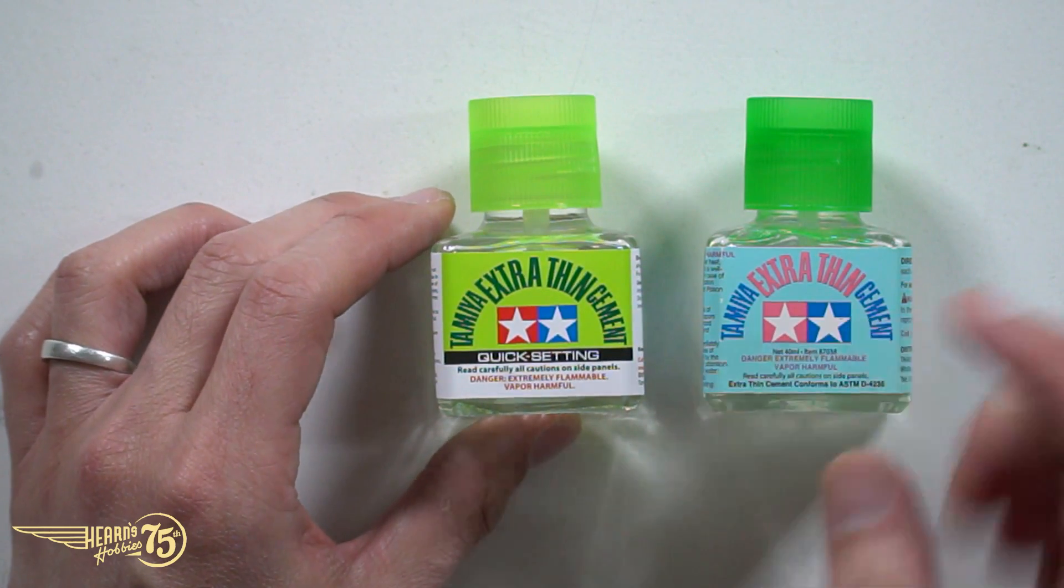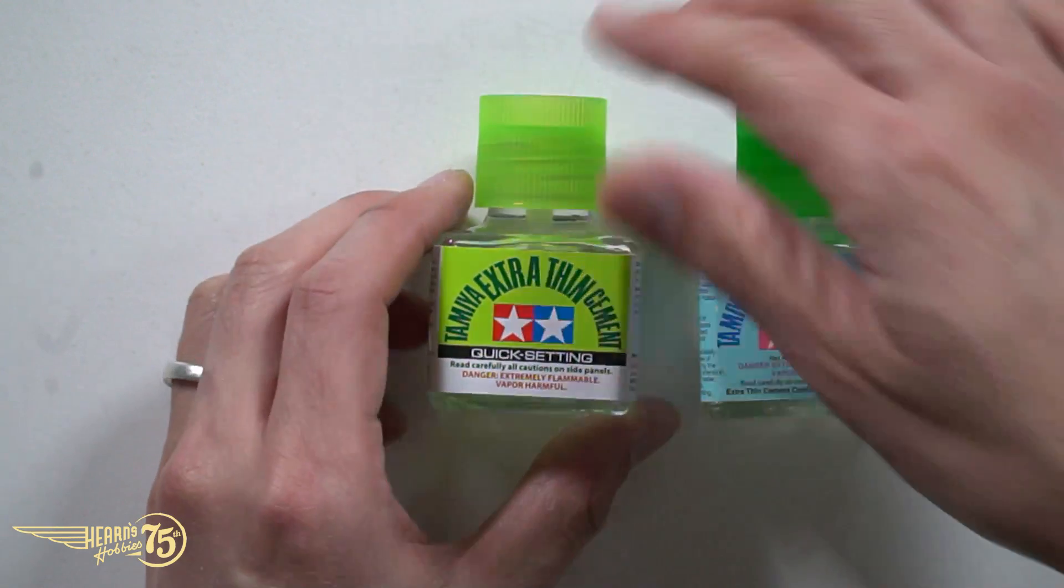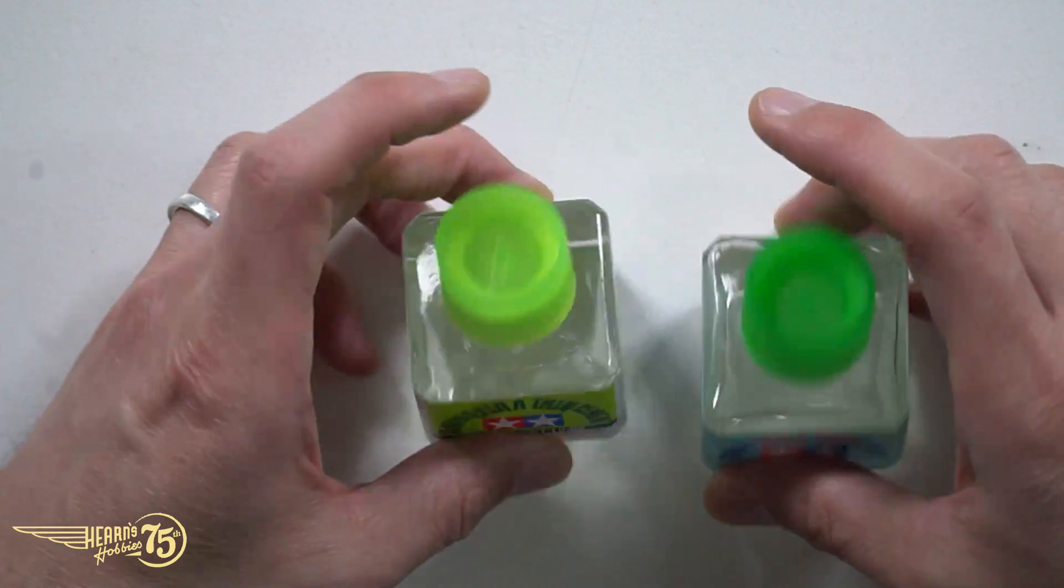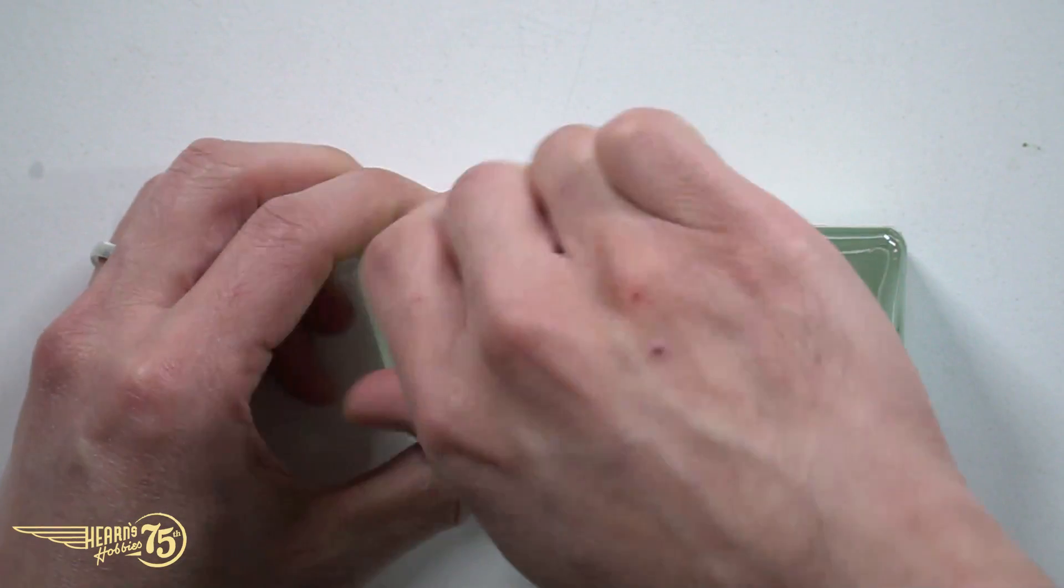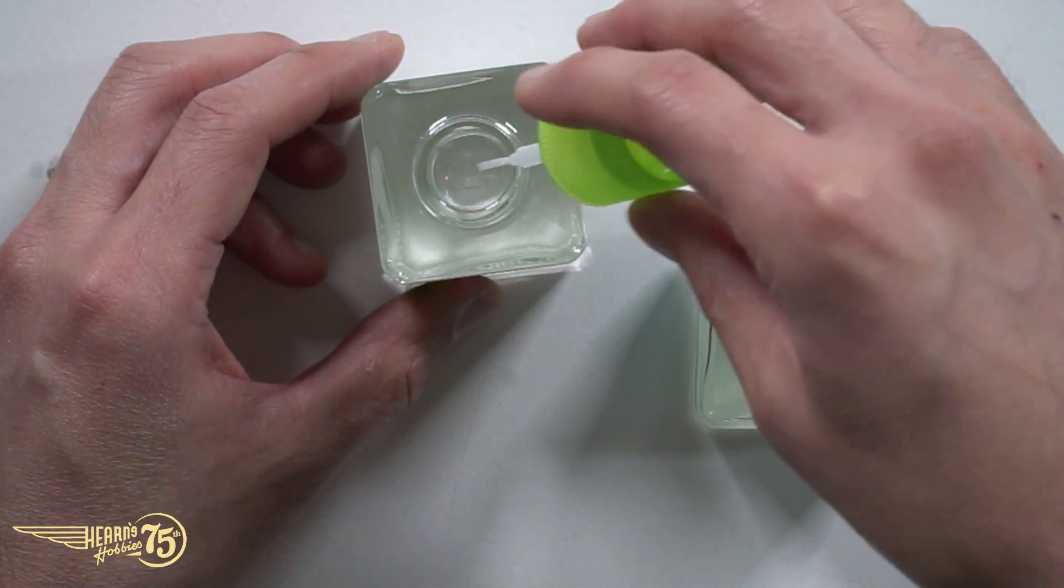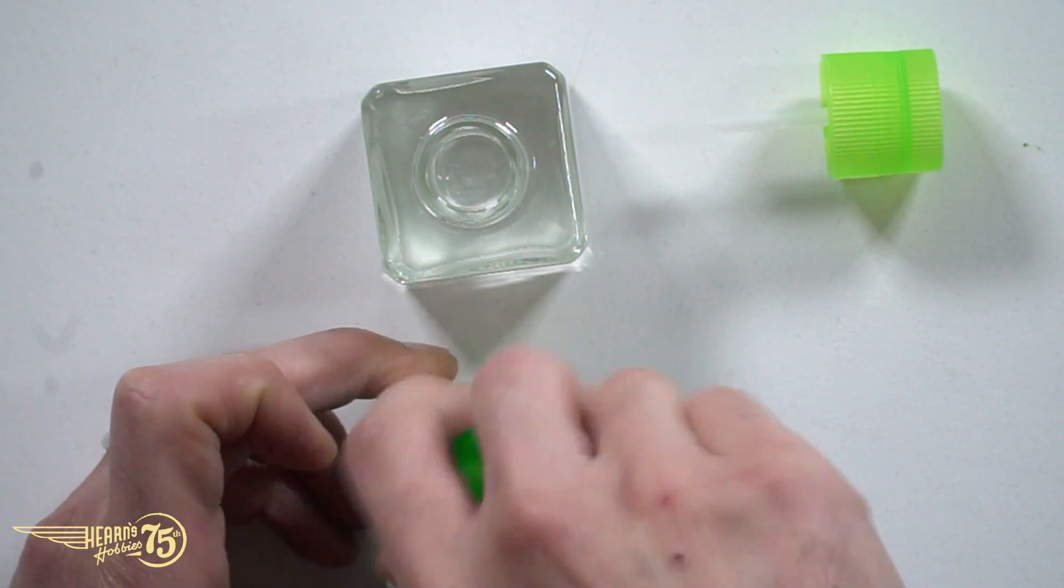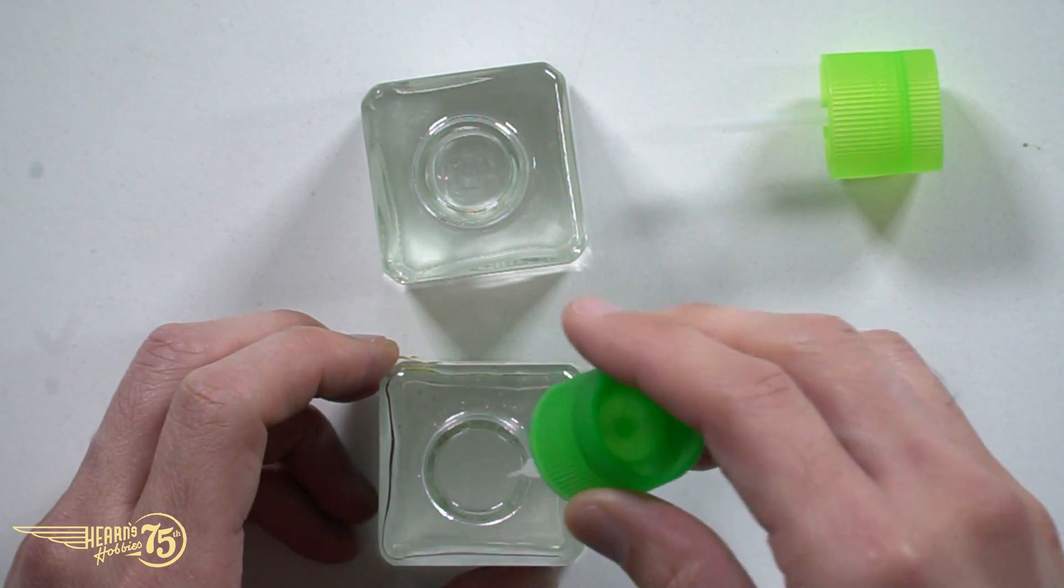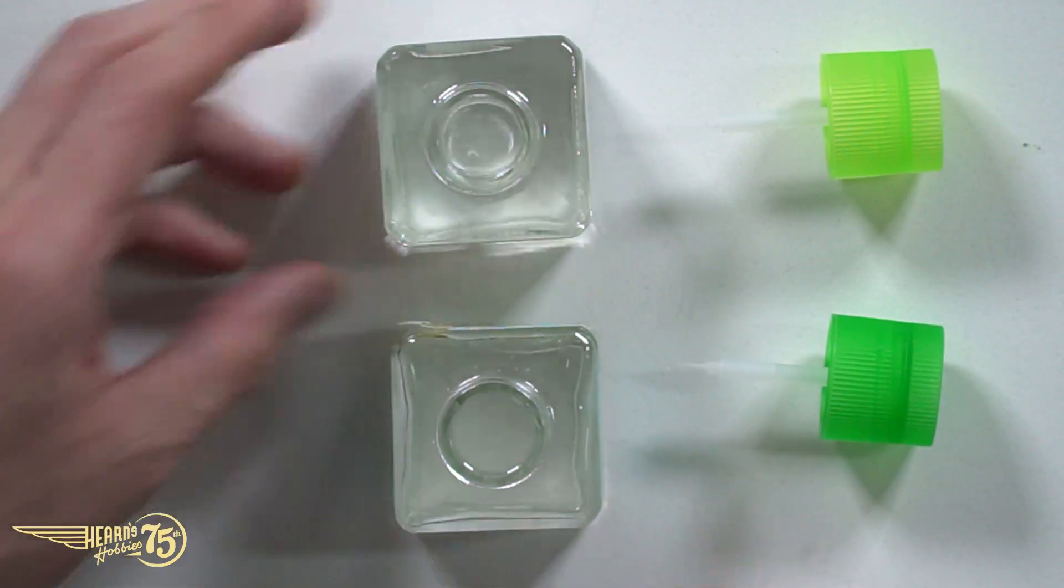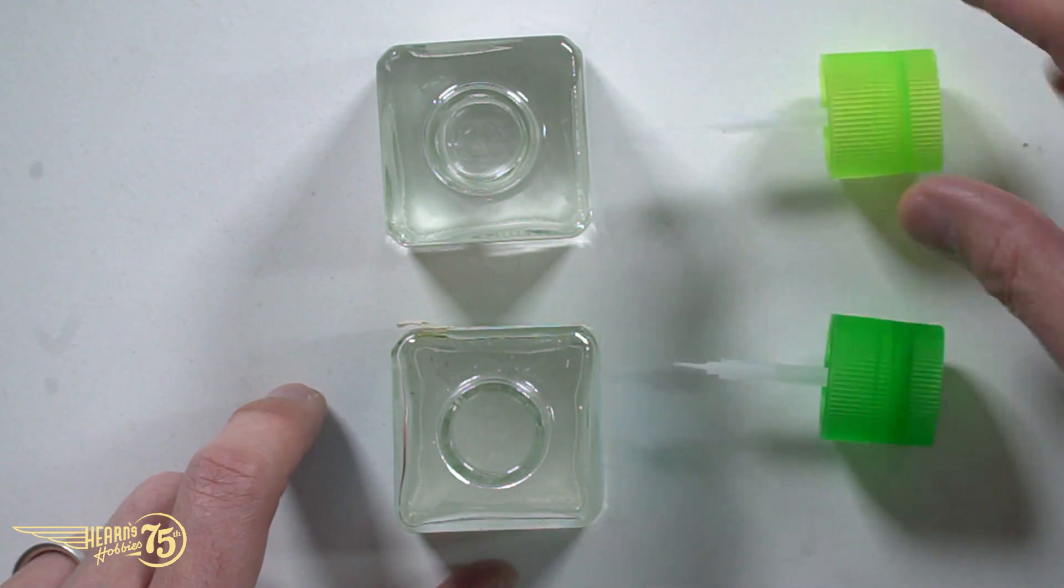So it's the Extra Thin Cements which it will work with and this has to do with the brush which is inside. Now if I open these like this, it's all going to spill out. I'll take the brushes off each one of these. They've got the super fine brushes. We've got the two different greens here. This is their standard Extra Thin and this is the Extra Thin Quick Dry. They do have the same brushes.